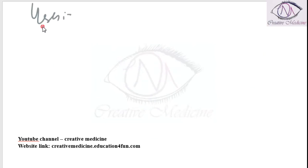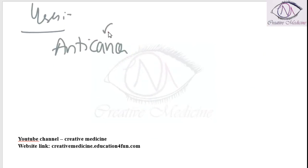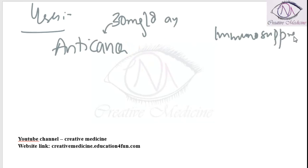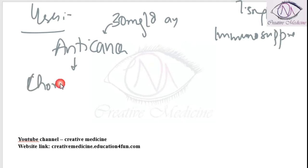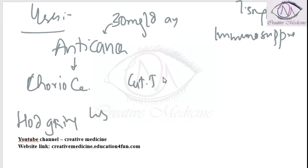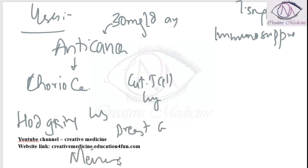Methotrexate has two categories of uses. Anti-cancer uses are seen at a dosage of 30 mg per day — it is used in choriocarcinoma, Hodgkin's lymphoma, cutaneous T-cell lymphoma, breast cancer, and meningeal leukemias.